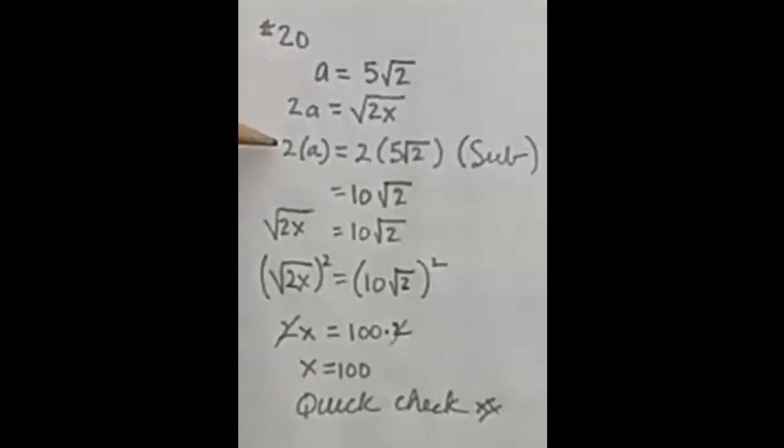And that's what I did here. So 2a equals this, 2 times 5 square root of 2, which is just 10 square root of 2. And by substitution, I placed it equal to the square root of 2x.